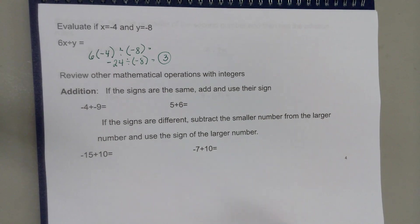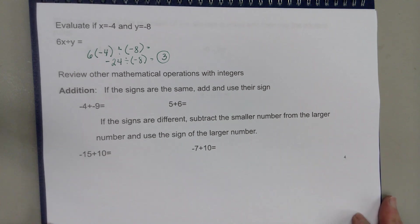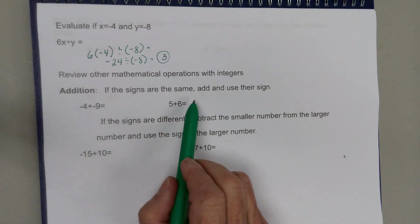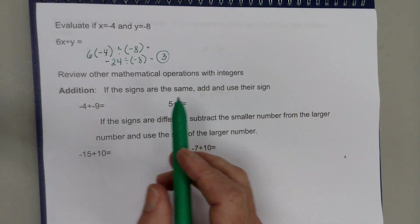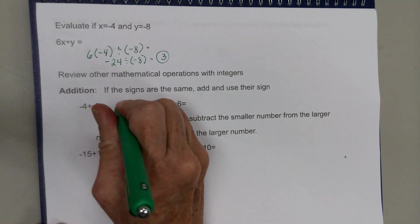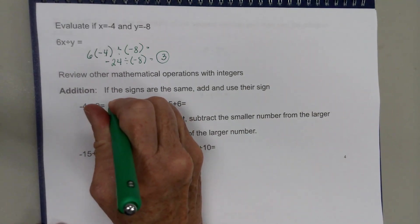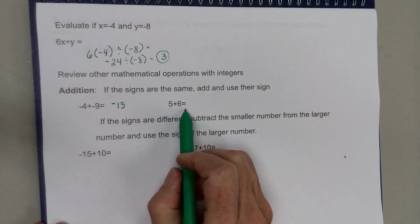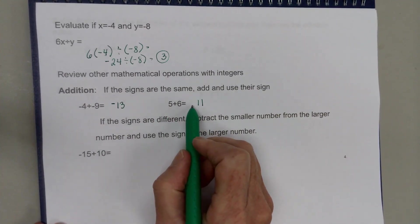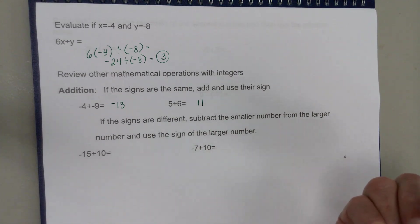Now let's review some other mathematical operations with integers, since some of your homework covers that material. For addition: if the signs are the same, you add and use their sign. For example, with two negatives, you add and the result is negative 13. With two positives, you add and the answer is positive — no need to write the positive sign.